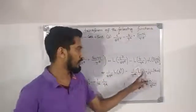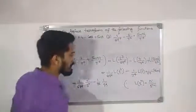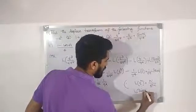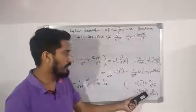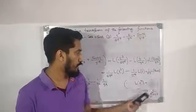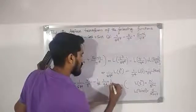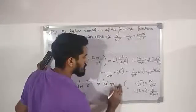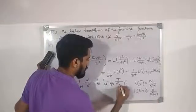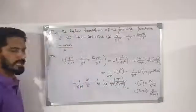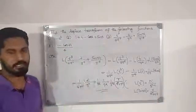Continuing, L{sin(πt)} gives π/(s²+π²). For the term 1/π^5 times L{sin(πt)}, we get 1/π^5 times π/(s²+π²). We simplify by verifying each inner calculation to arrive at the final answer.